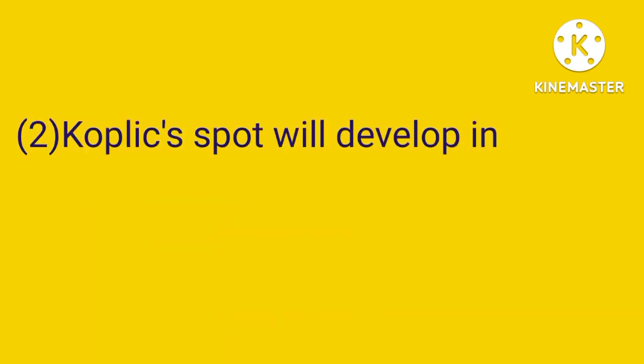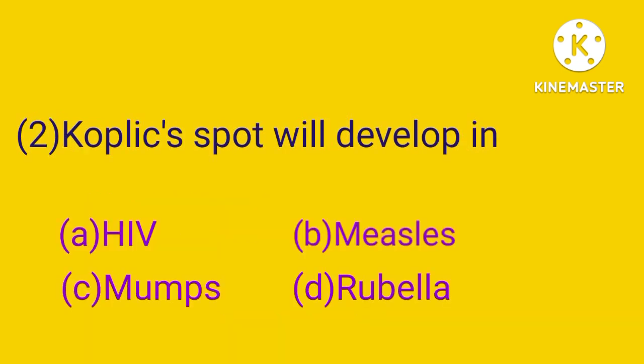Number 2. Koplik spots will develop in: HIV, measles, mumps, and rubella. The answer is B. Koplik spots will develop in measles.